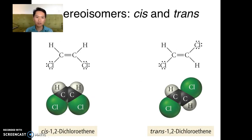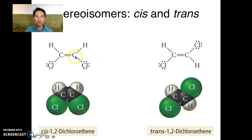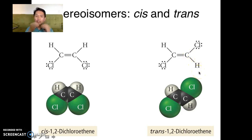Now let's talk about stereoisomers. Here are two example molecules. Do they have the same formula? The molecule on the left has two carbons, two chlorines, and two hydrogens; the molecule on the right also has two carbons, two chlorines, and two hydrogens — yes, same formula. Are the atoms connected in the same way? The left molecule has a carbon with a double bond to the other carbon, a single bond to hydrogen, and a single bond to chlorine — and the same is true for the right molecule. So yes, they have the same connectivity.